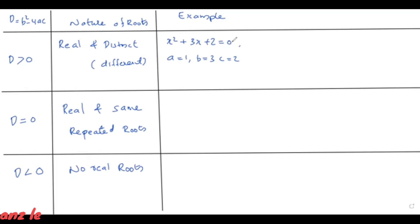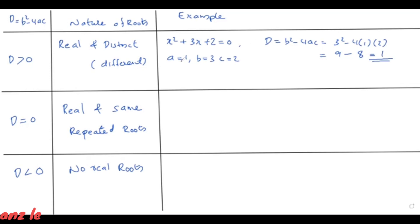Example: x squared plus 3x plus 2 equals zero. We compute D equal to b squared minus 4ac. Here b is 3, a is 1, c is 2. So D equals 3 squared minus 4 times 1 times 2, that is 9 minus 8, which equals 1. Since 1 is greater than zero, D is greater than zero.